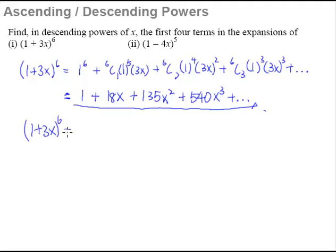So (1+3x)^6, instead of writing it this way, you may think this is the first term, this is the second term, well, okay, fine, you can change it into something like this. So 1+3x is the same as 3x+1, alright? It's nothing different there.